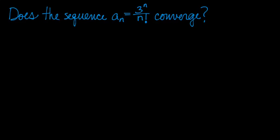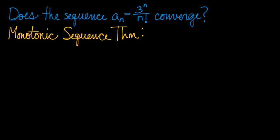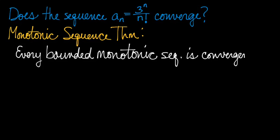Does the sequence 3^n over n factorial converge? In order to prove this, I believe it does converge. I'm going to use the monotonic sequence theorem, which states that every bounded monotonic sequence is convergent.